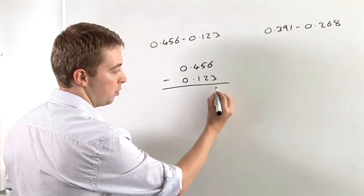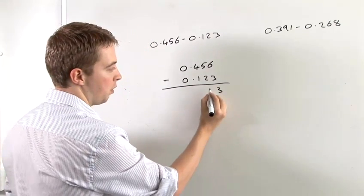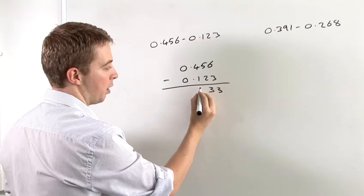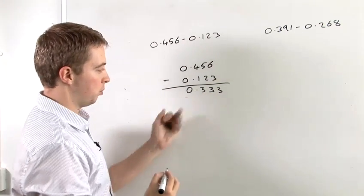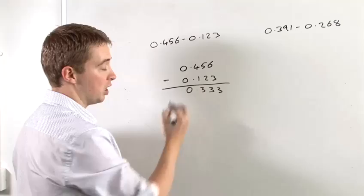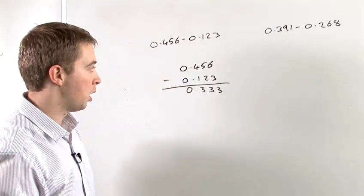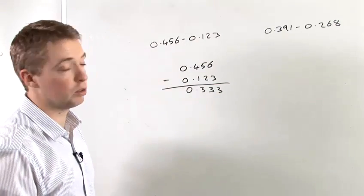So 6 minus 3 is 3, 5 minus 2 is 3, and 4 minus 1 is 3. We put the point at the bottom and obviously 0 minus 0 is 0. And so you can see the result of that sum.